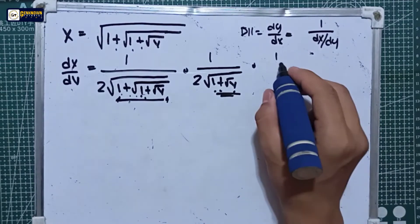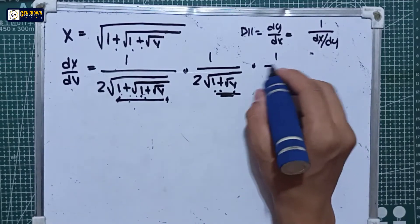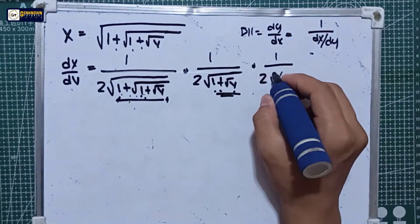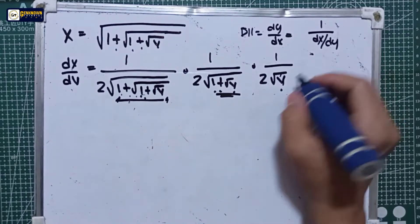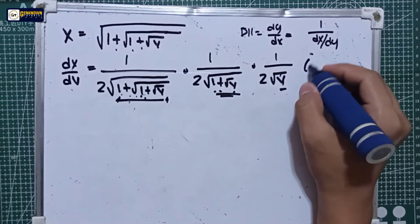That derivative is equal to 1 over 2 times the square root of y, multiplied by the derivative of y which is equal to 1.